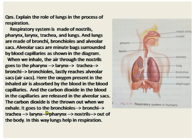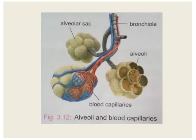The carbon dioxide is thrown out when we exhale — it goes from the bronchioles to bronchi, trachea, larynx, pharynx, nostrils, and out of the body. In this way, lungs help in respiration. Students, you will draw the diagram of the respiratory system in humans, as well as the diagram showing alveoli and blood capillaries.